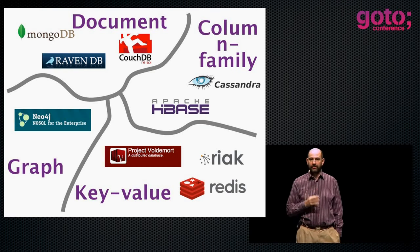Another very common data model is the document data model. The document data model thinks of a database as storage of a whole mass of different documents, where each document is some complex data structure. Usually that data structure is represented in JSON, because JSON is what's fashionable. The usual document databases allow you to say 'give me a document that has these fields with these values.' You can query into the document structure, retrieve or update portions of the document. There's a big difference to the key-value store, where the structure is very opaque — the document is much more transparent.